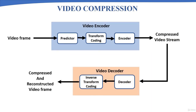Video compression is the process of using a codec — coder and decoder — to process your video files and reduce or eliminate unnecessary data. This makes video files smaller so you can store more video on your NVR, hard drive, or camera's micro SD card. A video encoder encodes and compresses the video frames, reducing file size, enabling more data storage and reducing transmission bandwidth requirements.